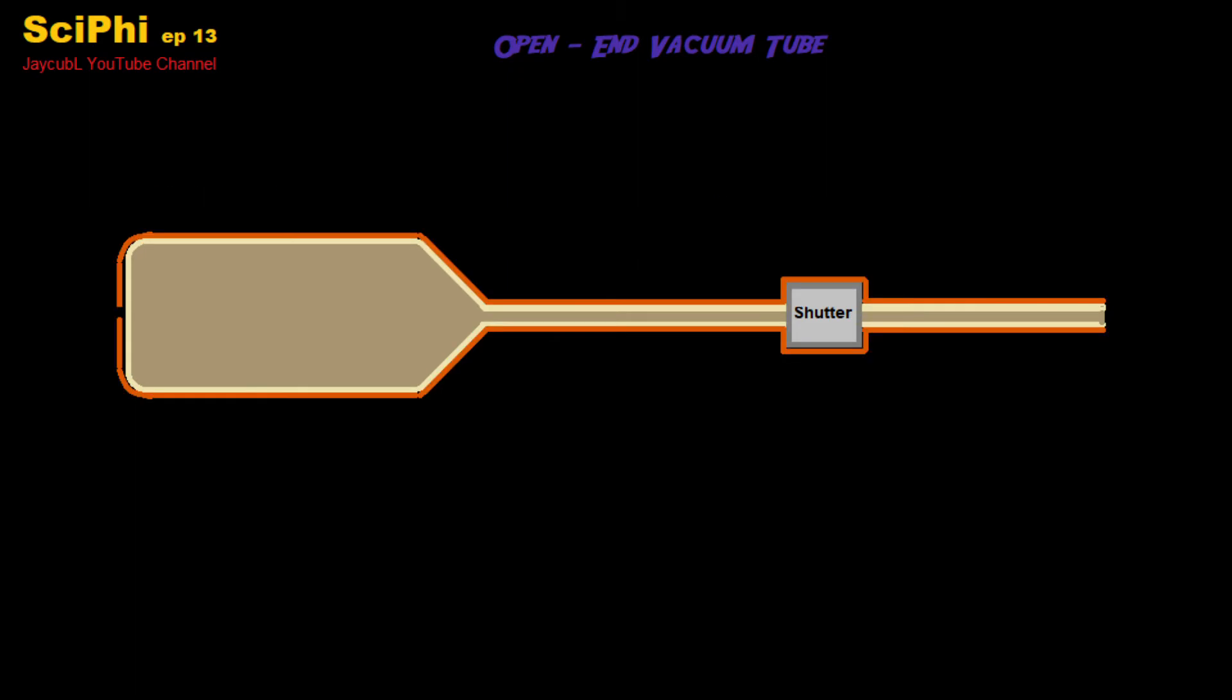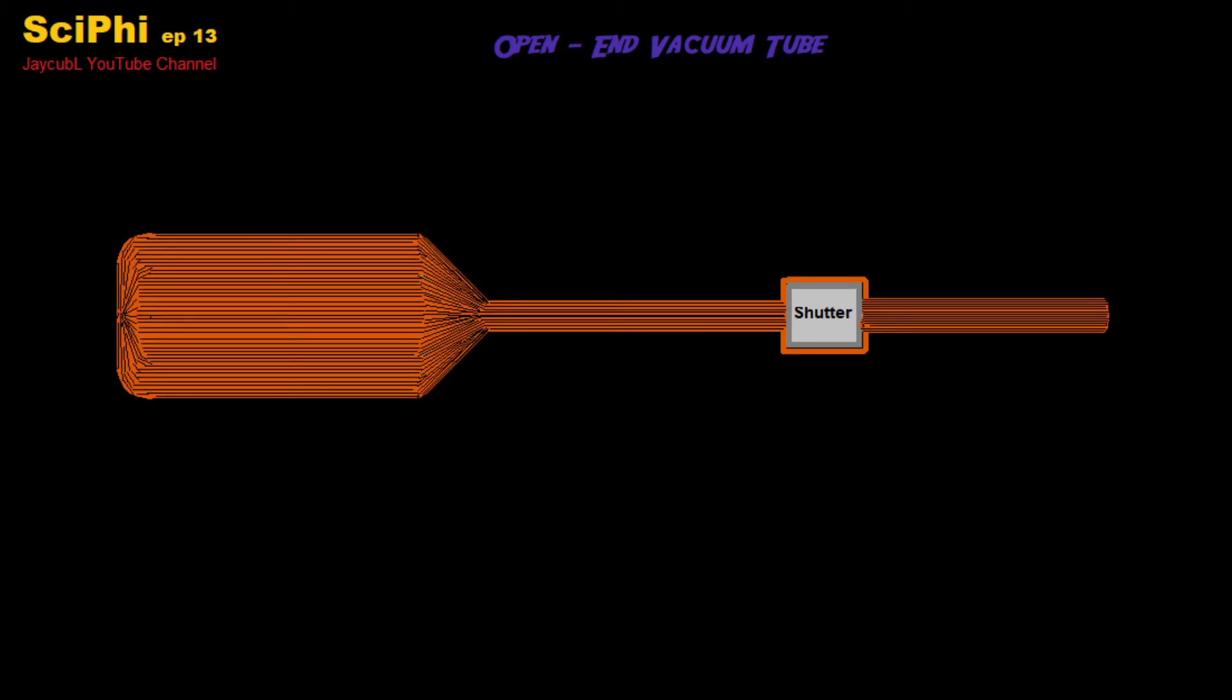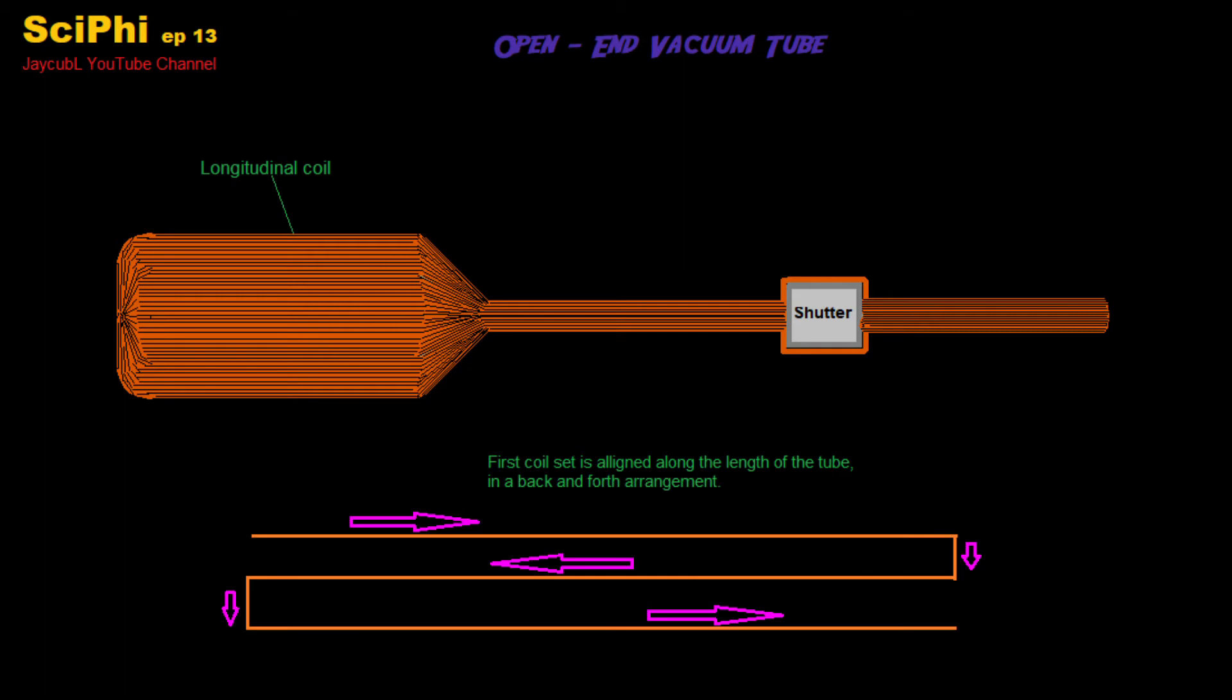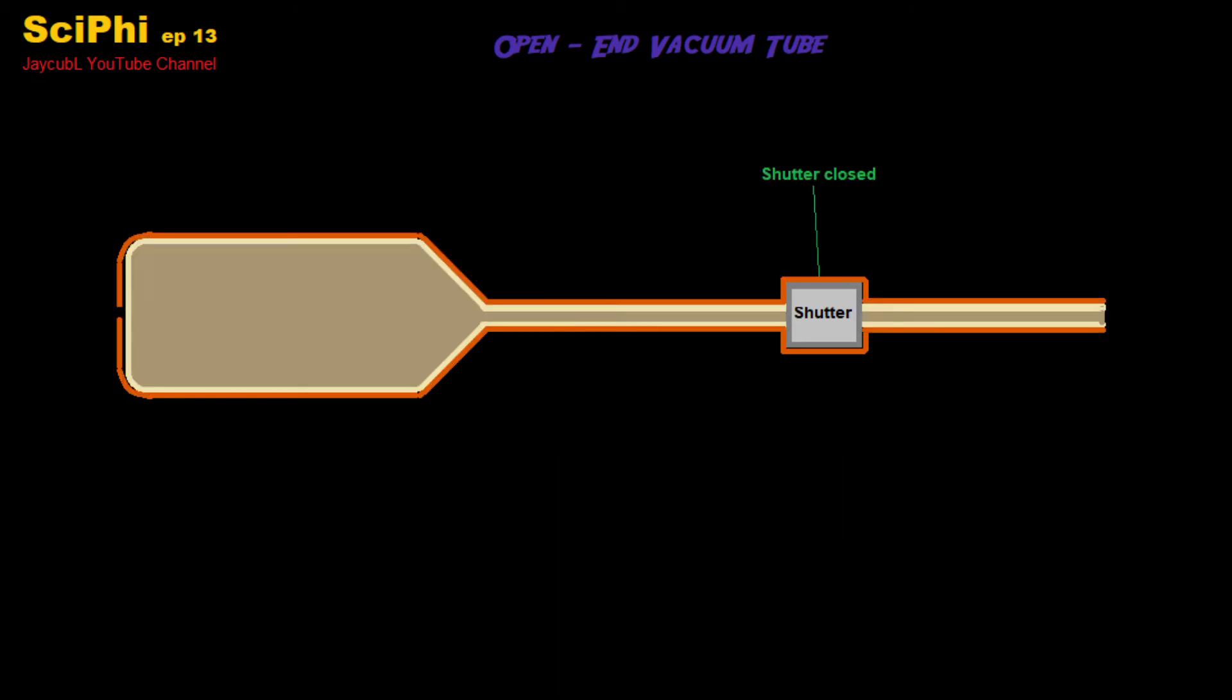The next part of the physical construction is a layer of insulated wire wrapped back and forth lengthwise, and this layer of wire is going to be energized with high frequency AC at a high voltage.